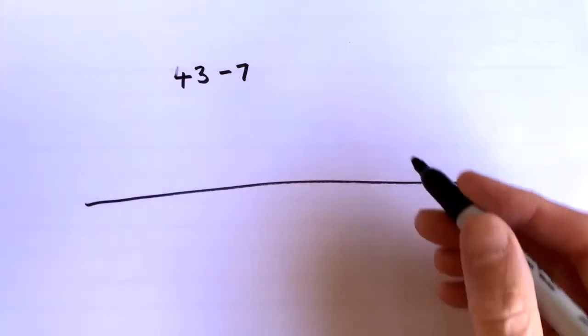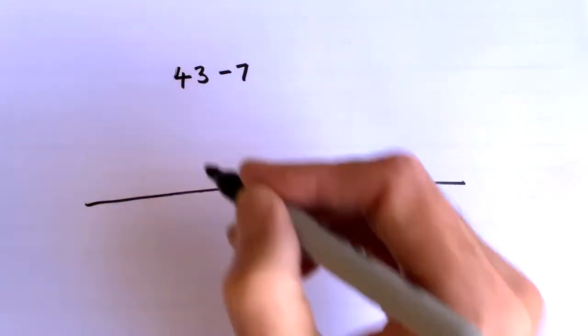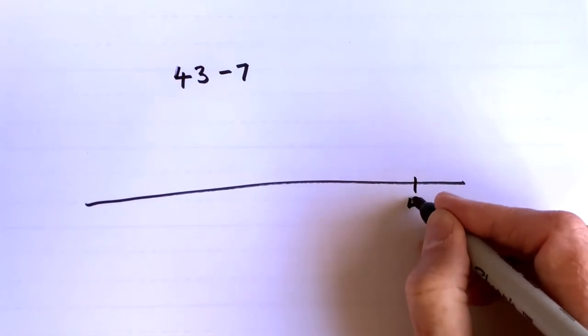But we're still going to bridge through 10, but this time it's the 10 that comes before the number that we're subtracting from. So if I've got 43,